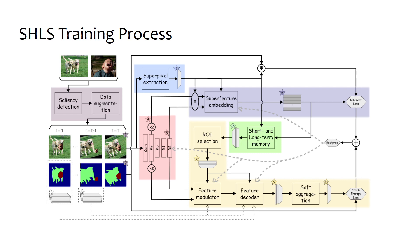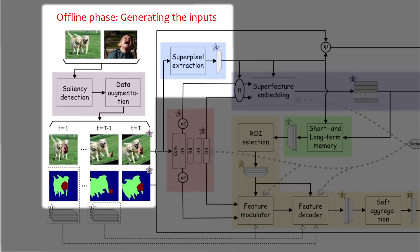The required inputs are generated during the offline phase, where we take a bunch of still images, then apply salience detection and data augmentation on them to synthesize a sequence of frames and masks. After synthesizing, the frames are segmented into super pixels.